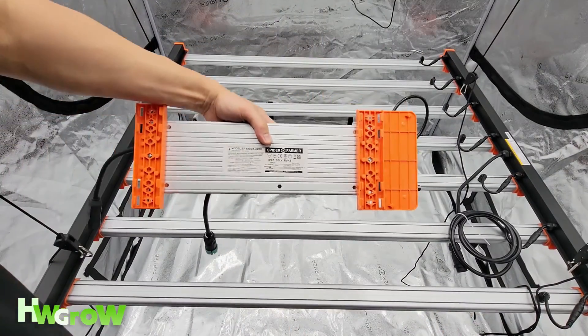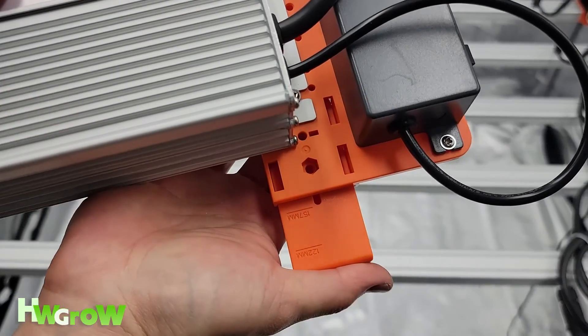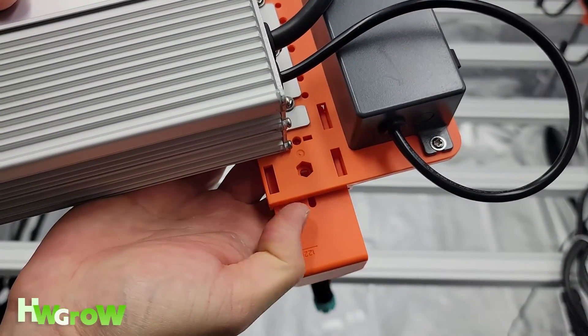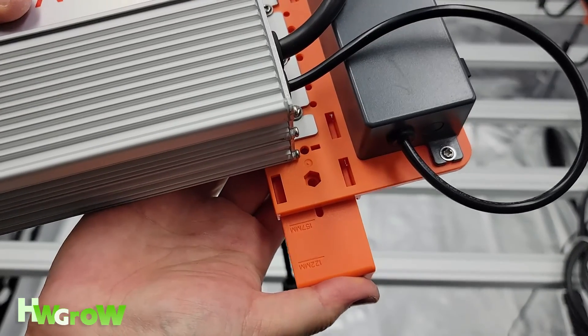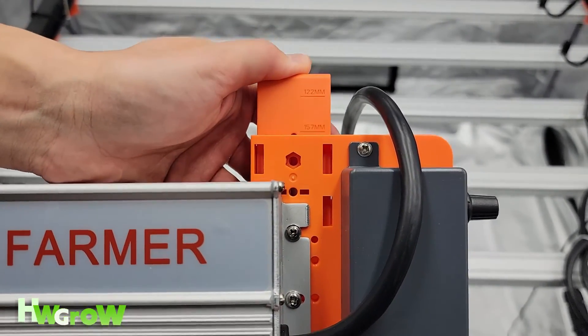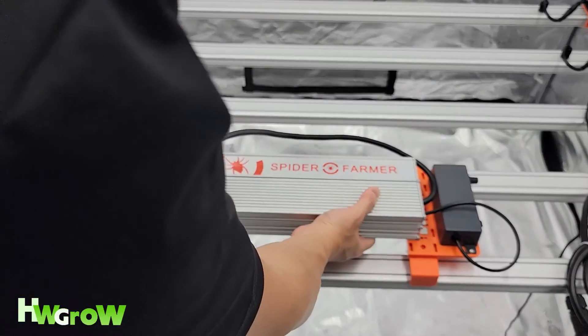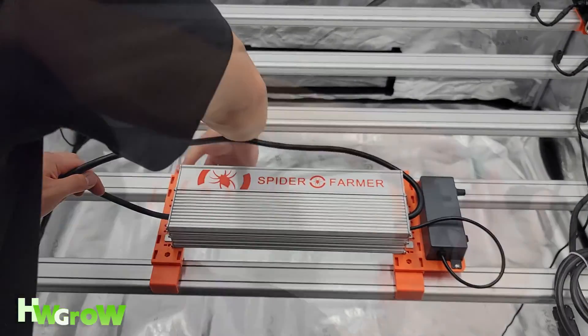Now grab your driver and the mounting brackets and place all four brackets in and push them until they're aligned with the 157mm line. When all four are installed, you can easily place this driver on top of the light anywhere you want to.